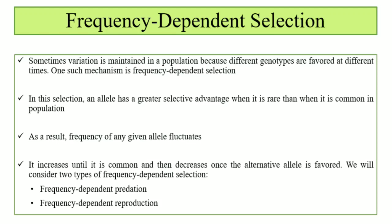Genotypes basically code for phenotypes. Polymorphism — different body forms existing within a single population — there is a selective advantage. And this mechanism is called frequency-dependent selection.